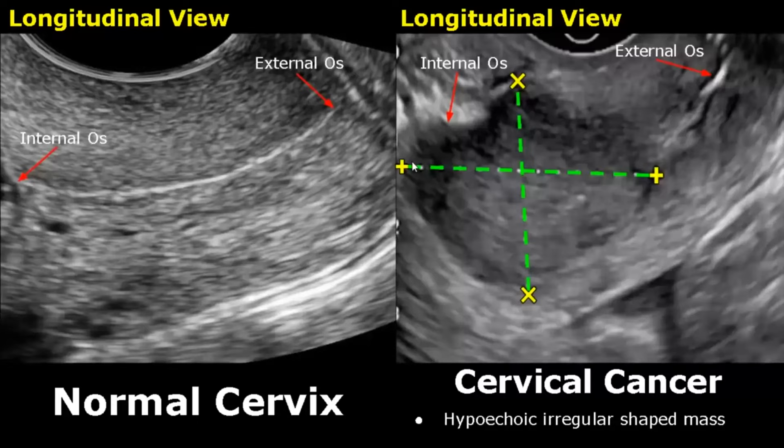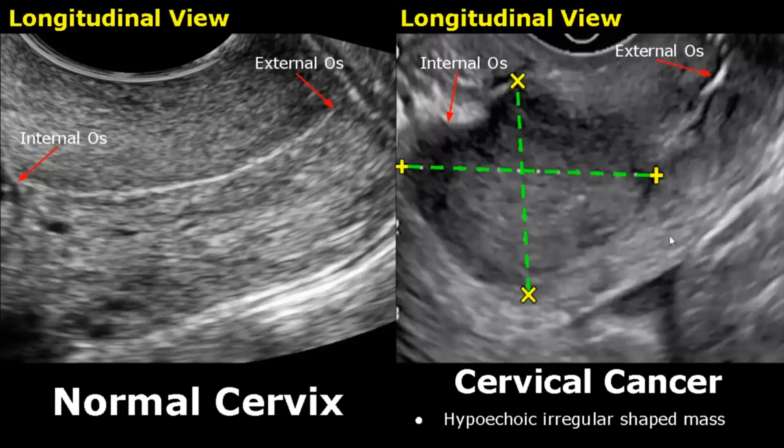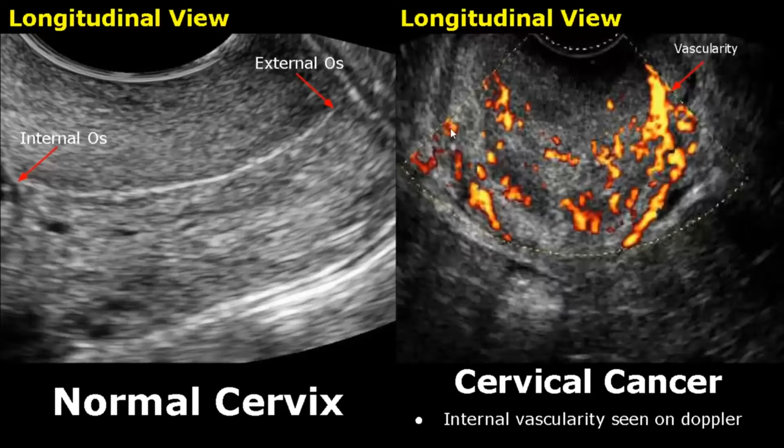Cervical cancer is difficult to see on ultrasound and sonography is not reliable for it. If the mass is large enough, we may see an irregularly shaped hypoechoic mass in the cervix. On Doppler, this mass will have internal vascularity — power Doppler shows many areas of vascularity. Thank you so much for watching. Please subscribe and stay tuned for more imaging videos.